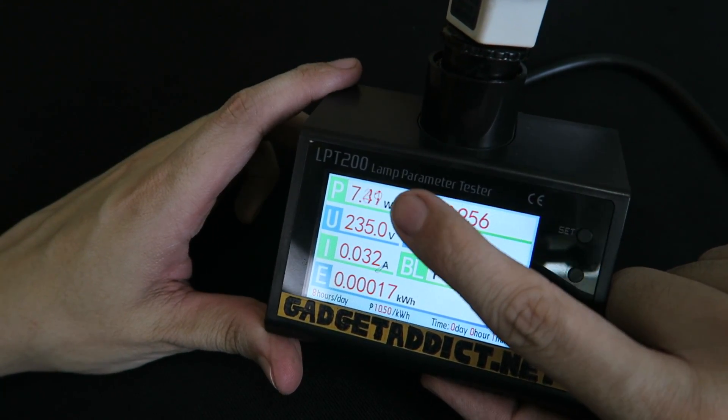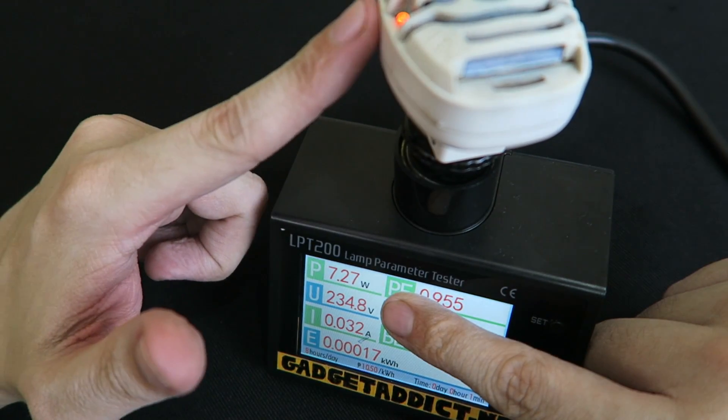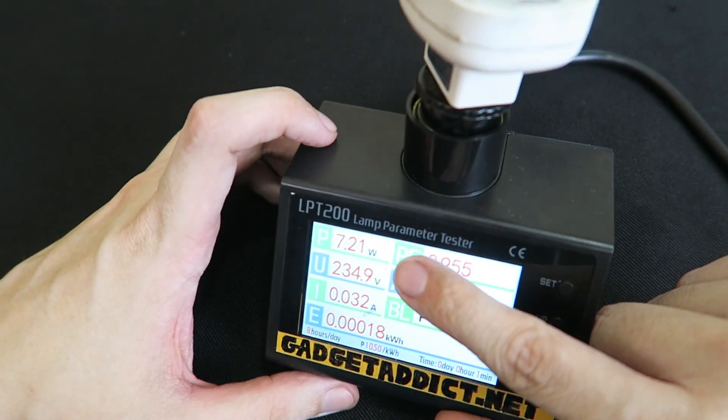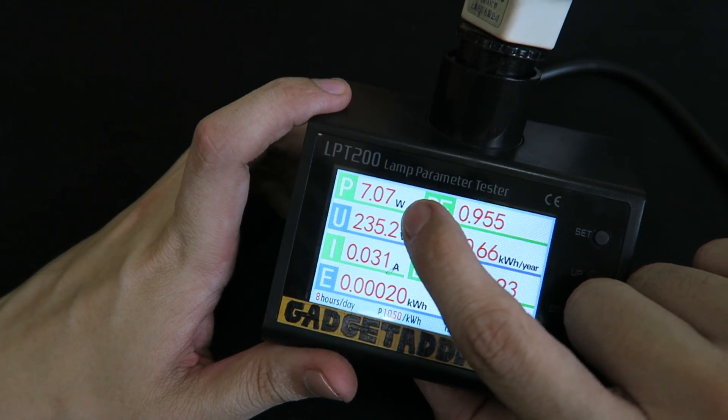Now if you're wondering why it used more power to start with, of course it has to get the heater up to temperature and then once it's up to temperature it won't take as much energy to actually maintain that temperature. So you can see we're already down to seven watts.